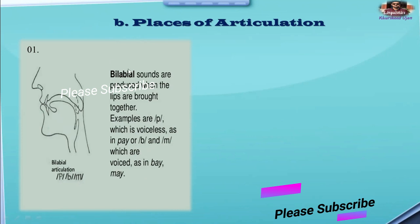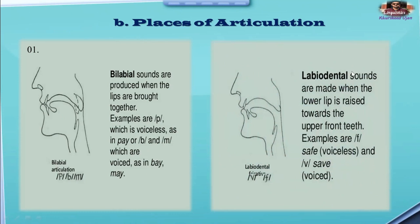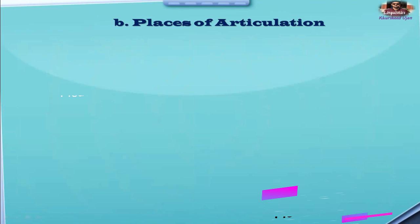The definition: bilabial sounds are produced when the lips are brought together. Here is another place of articulation — labiodental sounds. Labiodental sounds are made when the lower lip is raised towards the upper front teeth. For example, the sounds in 'fair,' 'safe,' and 'verse' — we are bringing the lower lip to the upper teeth. This is known as labiodental sounds.